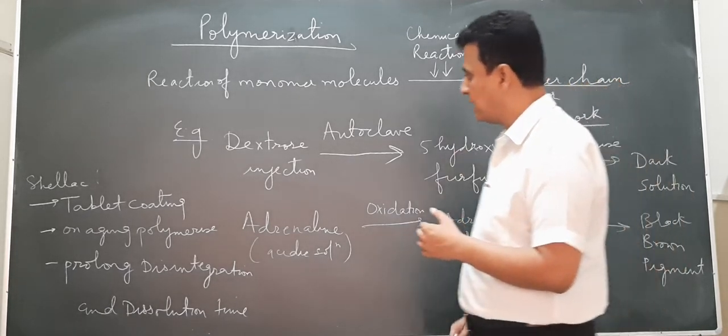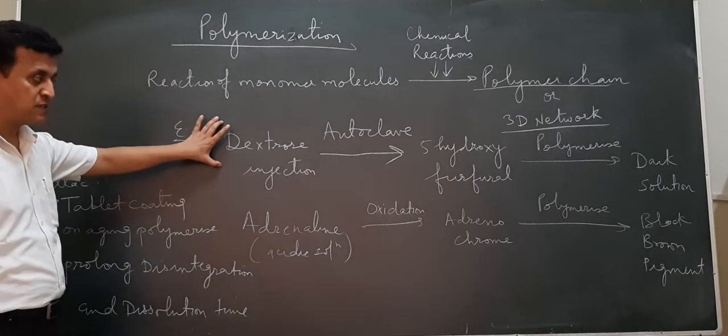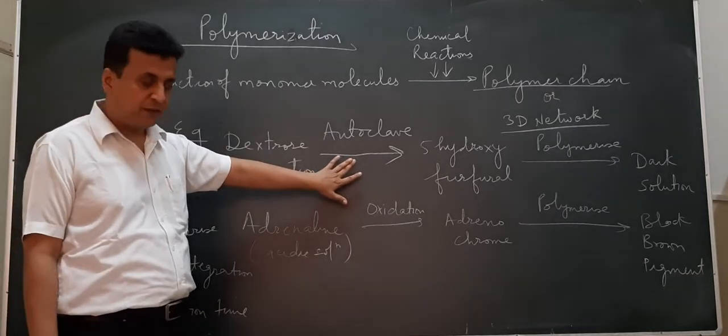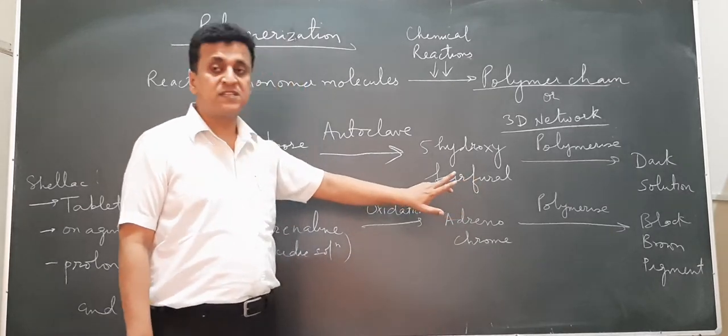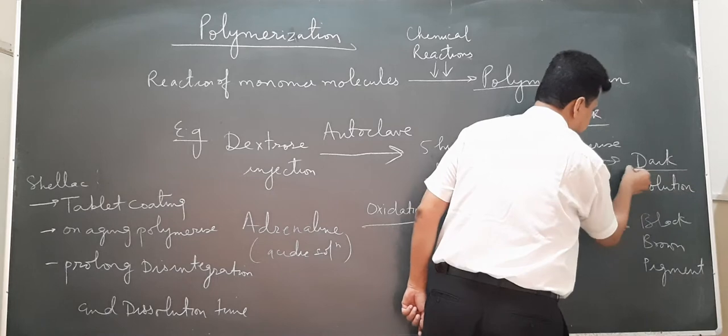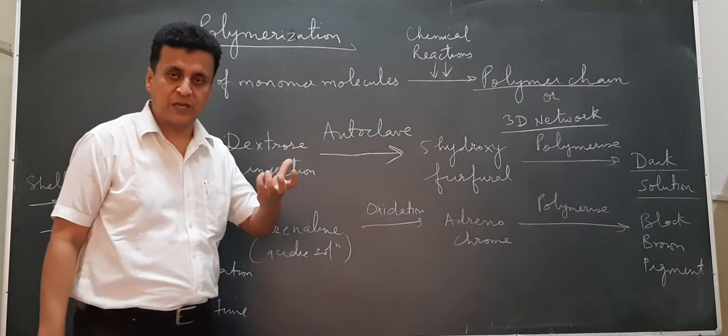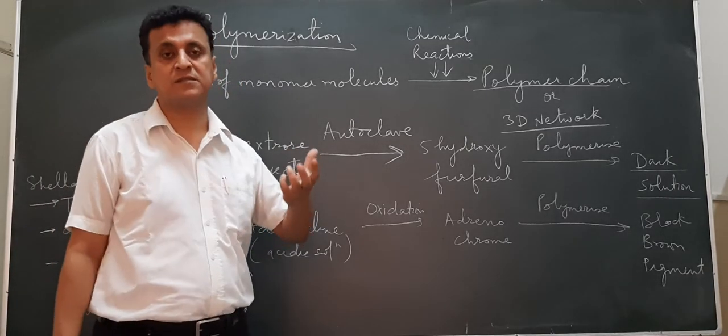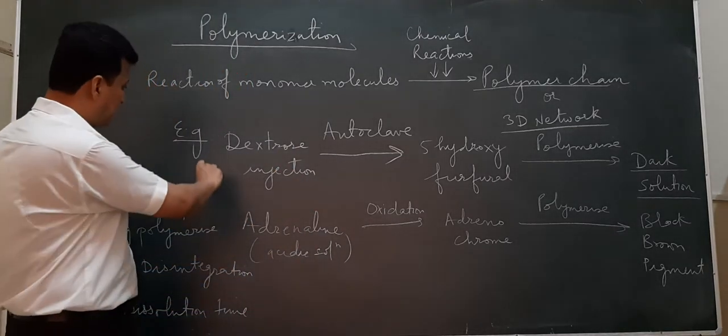There are some examples. The first example is dextrose injection, which when sterilized by autoclaving gets converted into 5-hydroxymethylfurfural, which gets polymerized and forms a dark solution. The injection should be clear, right? If it's a dark solution, the physical appearance is improper and it will not be accepted.